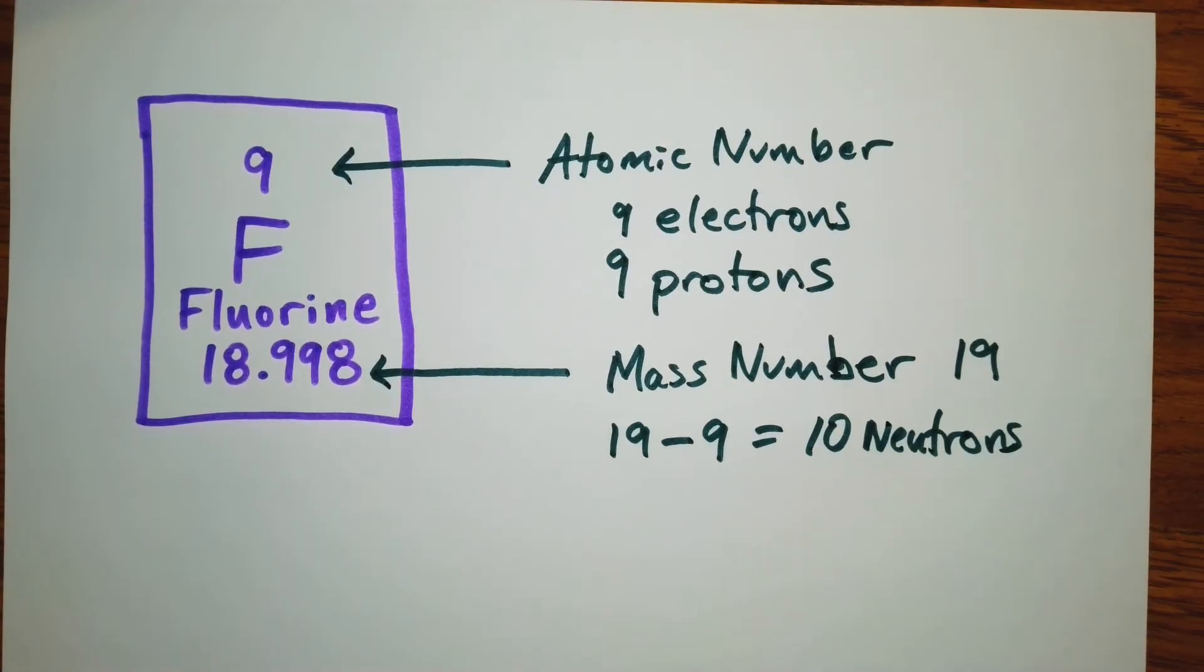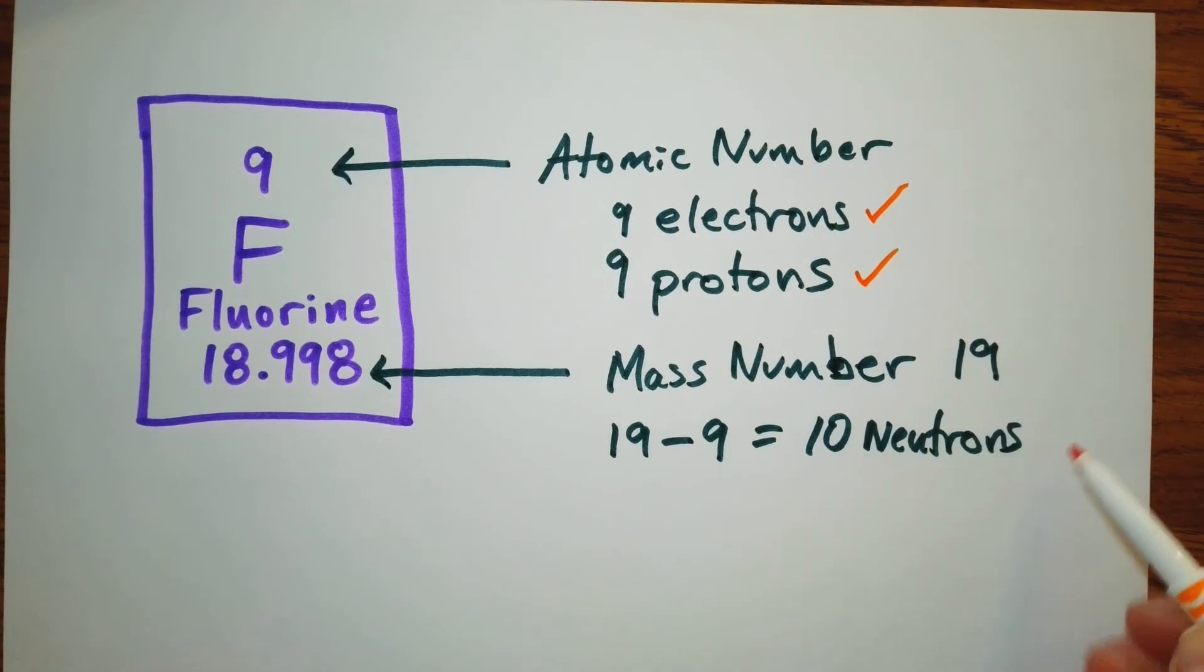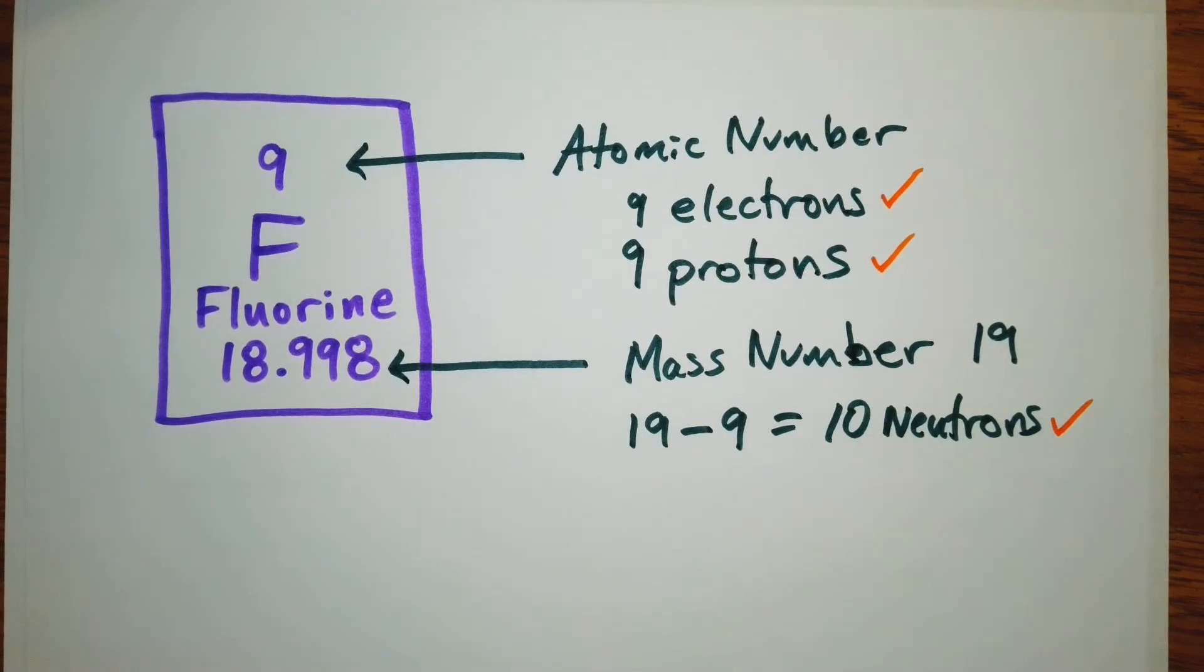So what do we have here? We have 9 electrons, 9 protons, and 10 neutrons.